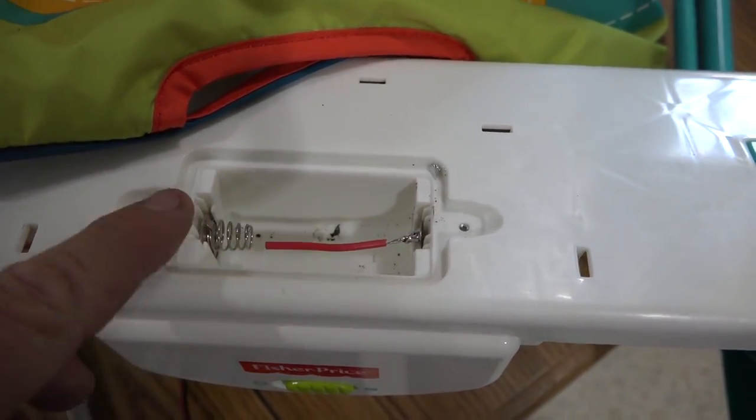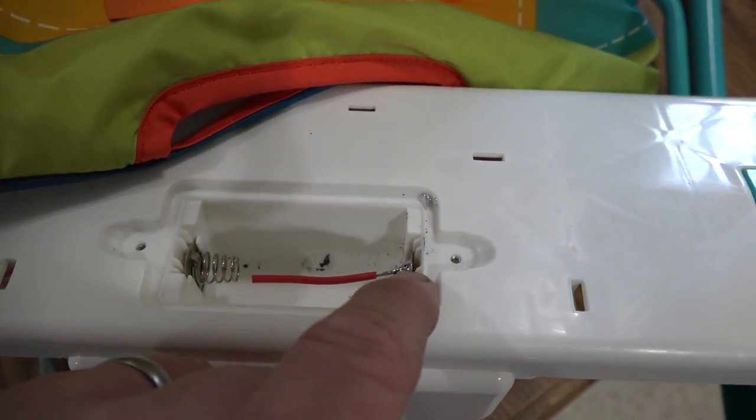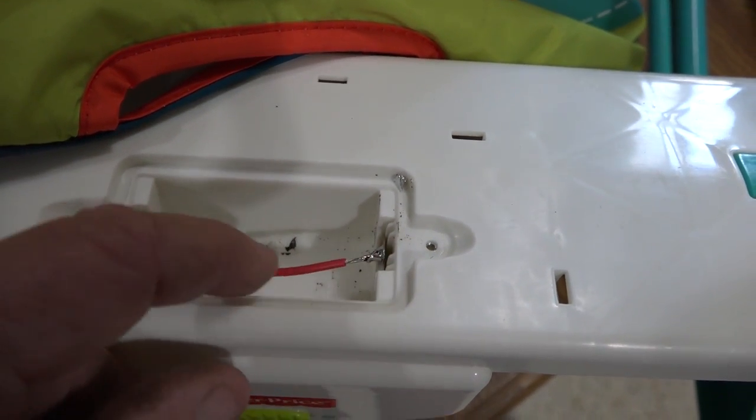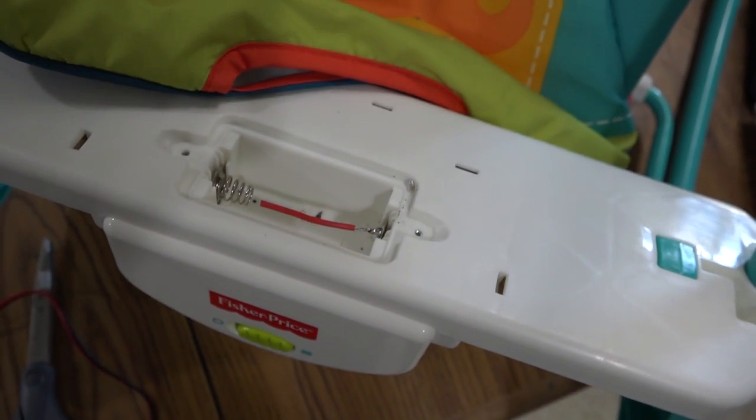So I went in, this is a 1.5 volt battery, the D size. So I went and I soldered a wire on the positive. And then, let me find it here.